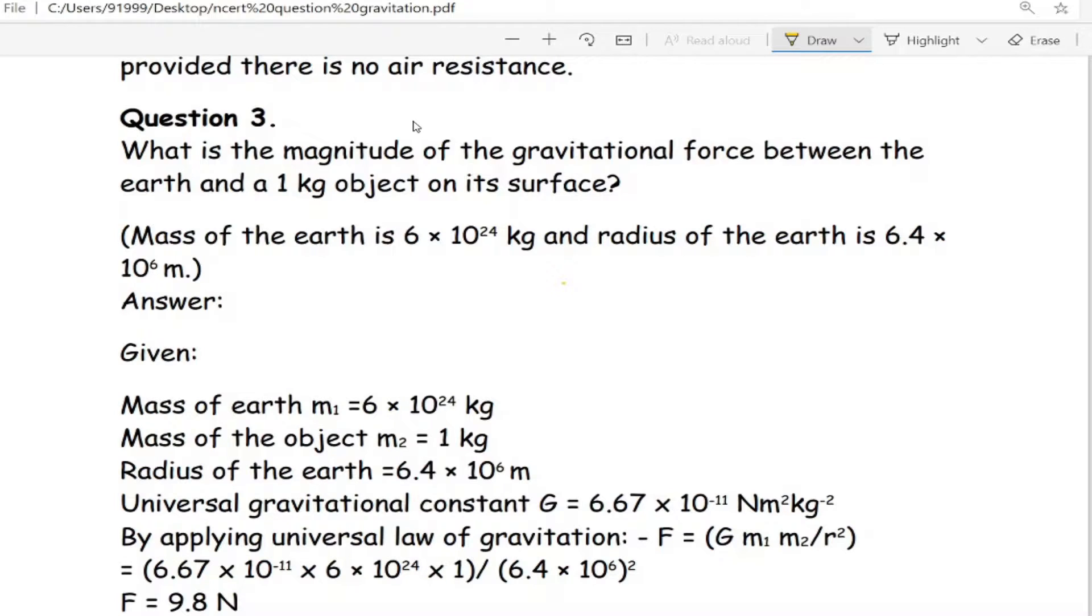What is the magnitude of the gravitational force between the earth and a 1 kilogram object on its surface? Mass of the earth is 6 × 10²⁴ kg. Radius of the earth is 6.4 × 10⁶ m.